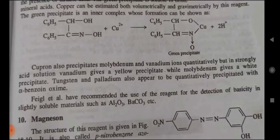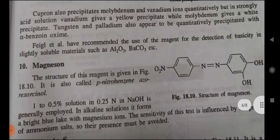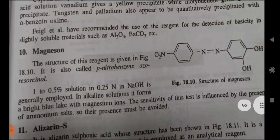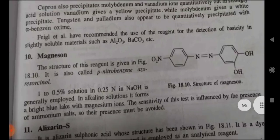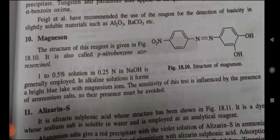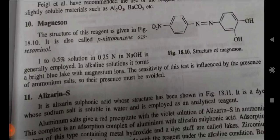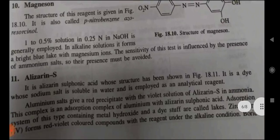Cuproine also precipitates molybdenum and vanadium quantitatively, but in strongly acid solution vanadium gives a yellow-colored precipitate while molybdenum gives a white precipitate. Tungstate and palladium also appear to give quantitative precipitates with alpha-benzoin oxime. Tenth — Magneson: it is also called para-nitrobenzeneazo-resorcinol. A 0.5 to 1% solution in 0.25 N NaOH is generally employed. In an alkaline solution, it forms a bright blue lake with magnesium, and the sensitivity of this test is influenced by the presence of ammonium salts, so their presence must be avoided.